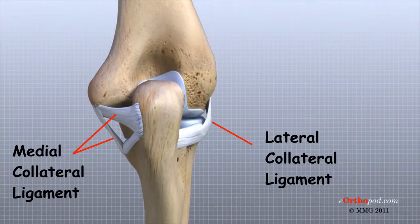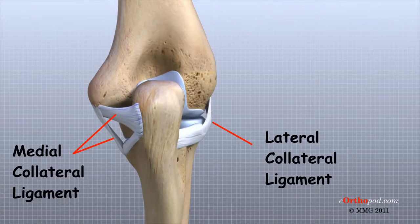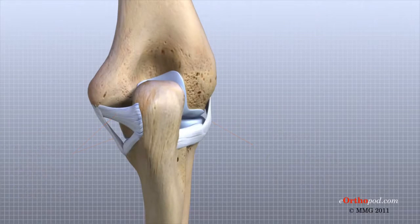They can be torn when there is an injury or dislocation to the elbow. If they do not heal correctly, the elbow can be too loose or unstable.